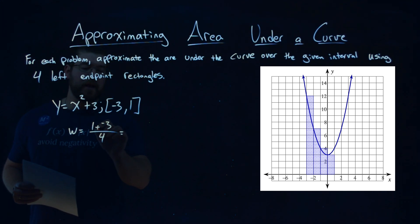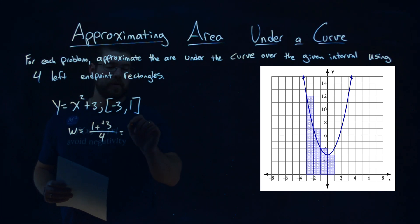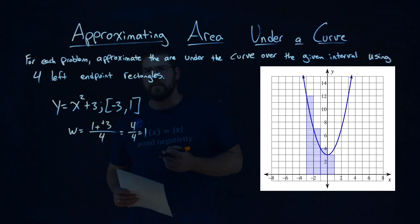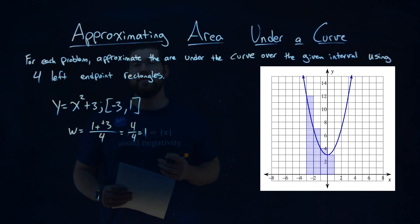Pretty easy. 1 minus negative 3 is plus a positive 3, so we have 4 over 4, which is 1. This actually makes it easy. Each one of our rectangles clearly, as you can see, is 1.